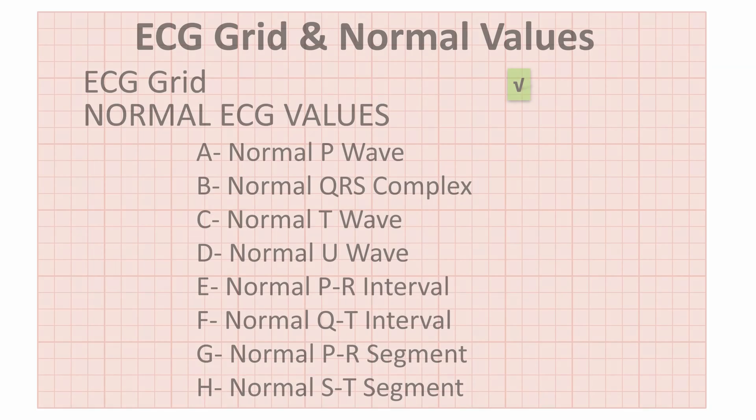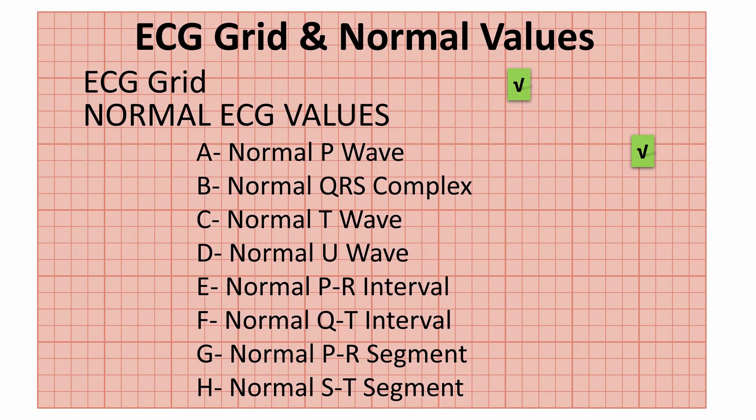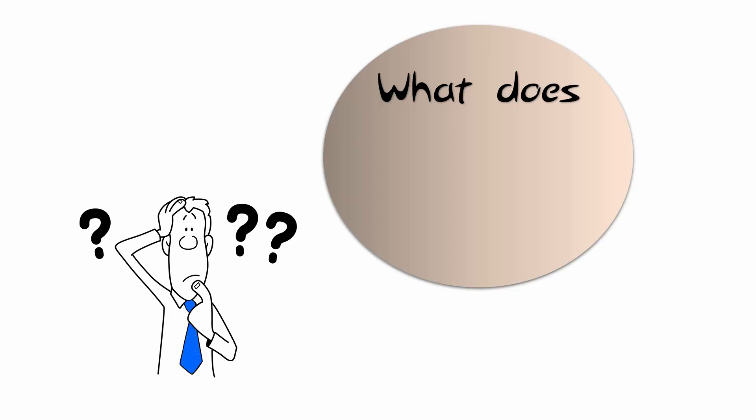So we have finished the ECG grid and the normal P wave value, and we will continue our talk about the normal ECG values in the next videos. And now let's jump to the question of this day. What does M-shaped P wave mean?